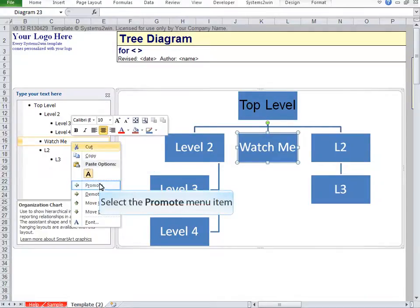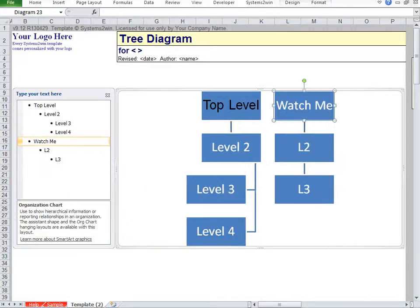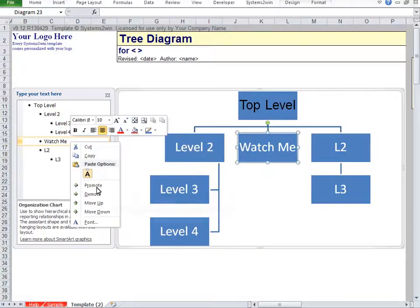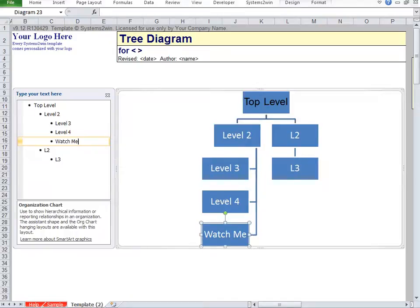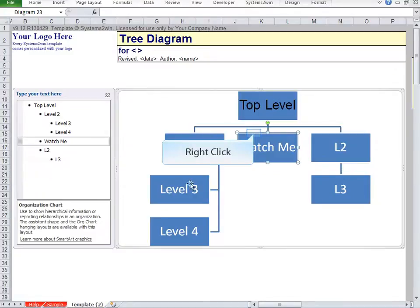If you choose the Promote menu item, that will move it up a level. And if that's not what you meant to do, you can always use the Ctrl-Z key to undo. If you select the Demote menu item, that will move it down beneath the object to the left.